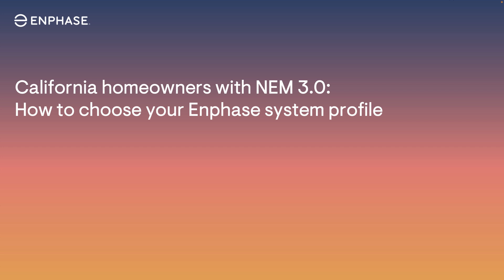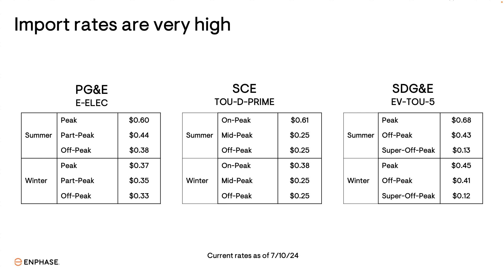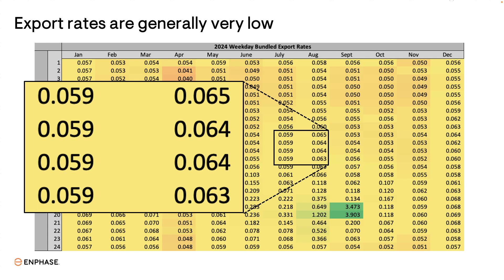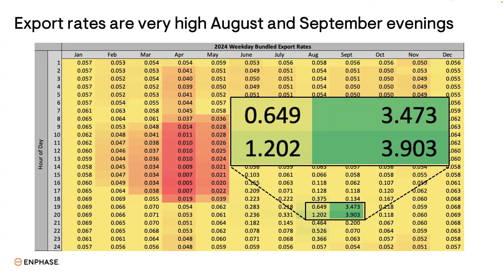First let's review how the Net Billing Tariff works. It has two key components: import rates and export rates. Import rates are the price you pay for electricity from the utility, and they are generally very high, especially in the evening. Export rates are the price the utility pays you for sending solar energy to the grid. Export rates are generally very low; however, during the months of August and September in the evening, export rates are very high.